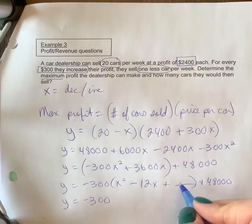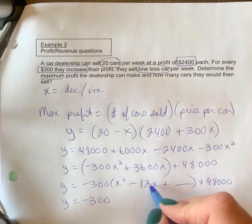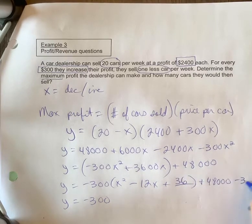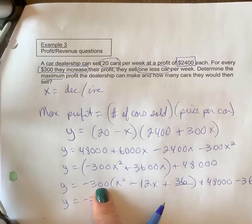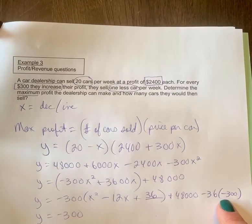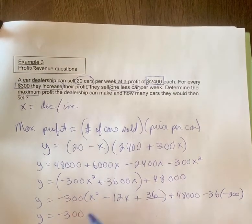Okay, and then what goes in the blank? b over 2 squared. So 12 divided by 2 is 6, 6 squared is 36. Minus 36 times negative 300—remember, you've got to times it by that 'a' value there—so negative 36 times negative 300, I had to multiply it by that.